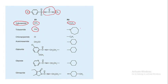Tolazamide is tolbutamide plus a seven-membered azepine ring, which is a heterocyclic ring. Then chlorpropamide: the R1 group is chlorine, and the R2 side chain is a propyl chain along with the urea moiety. That propyl side chain is why it is called propamide.